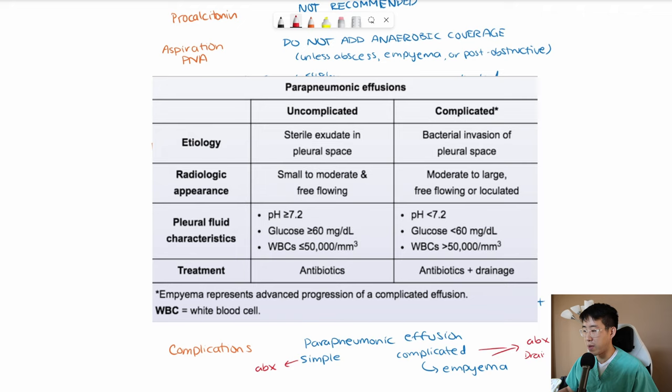And then basically the way to differentiate between parapneumonic effusion and a complicated parapneumonic effusion is going to be its white blood cell count, its pH being less than 7.2, and its glucose being less than 60.